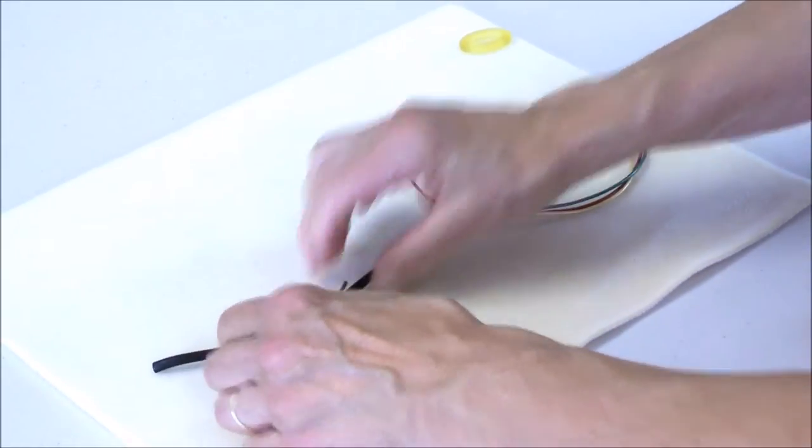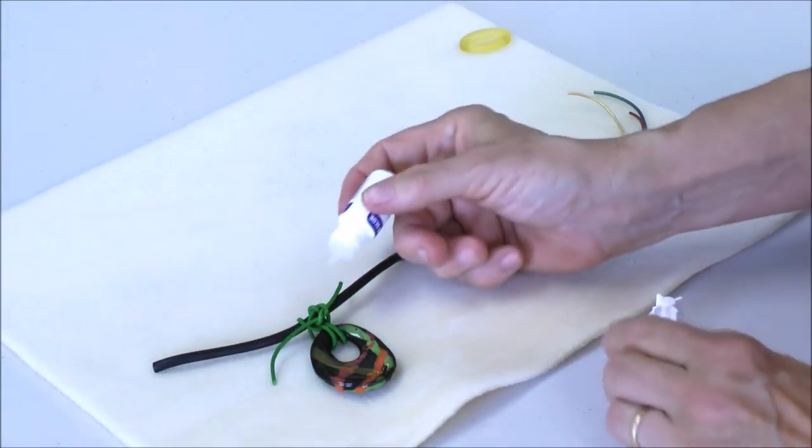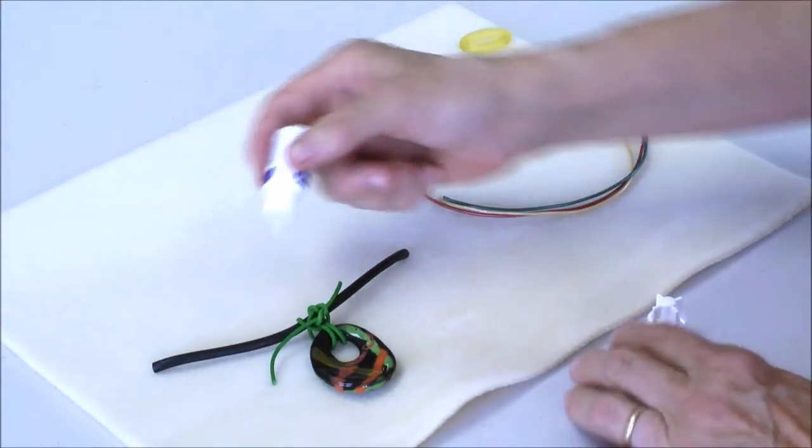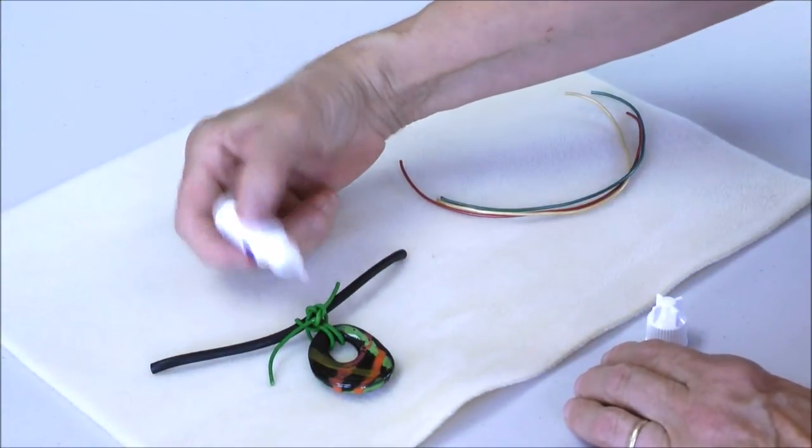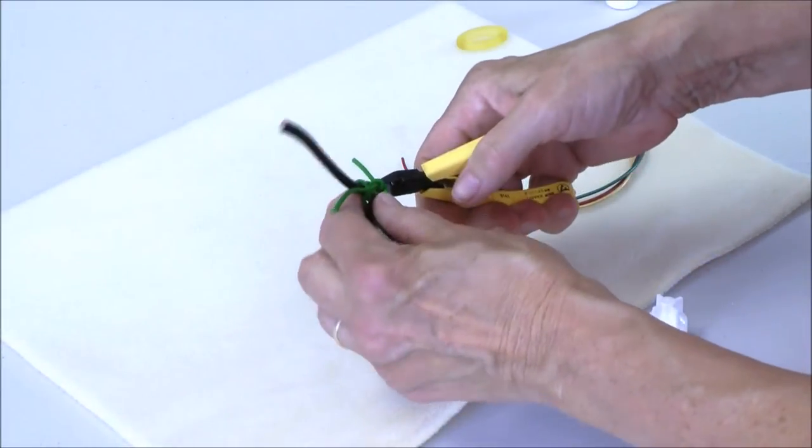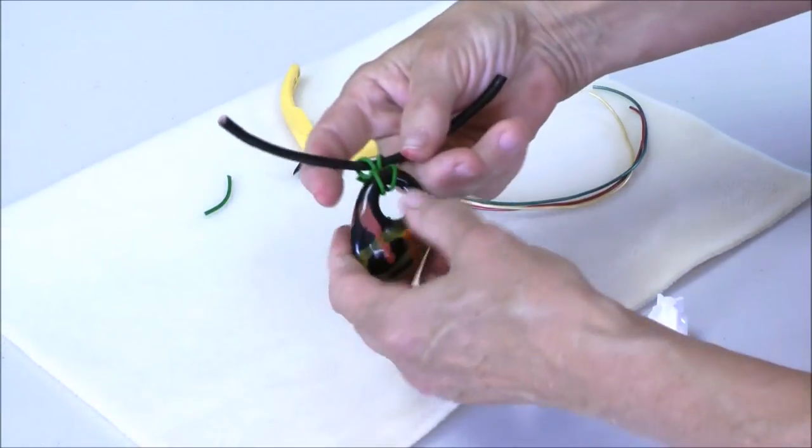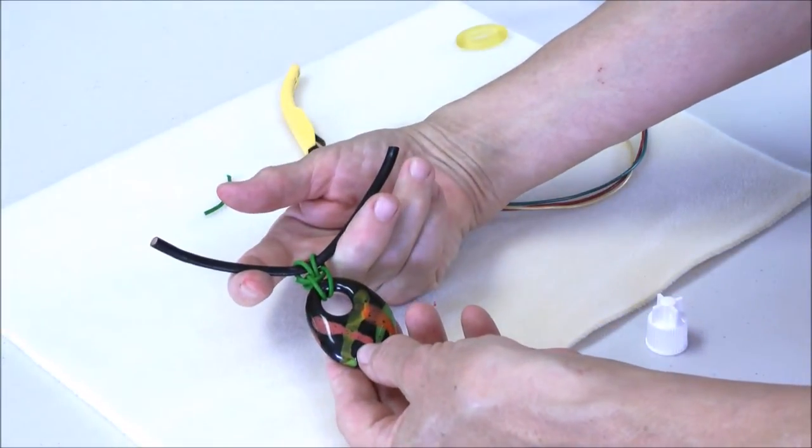And then what I'll do is take a little super glue, put a couple of drops on either side of the knot, and I will trim off the tails and I have a very interesting bail for my pendant.